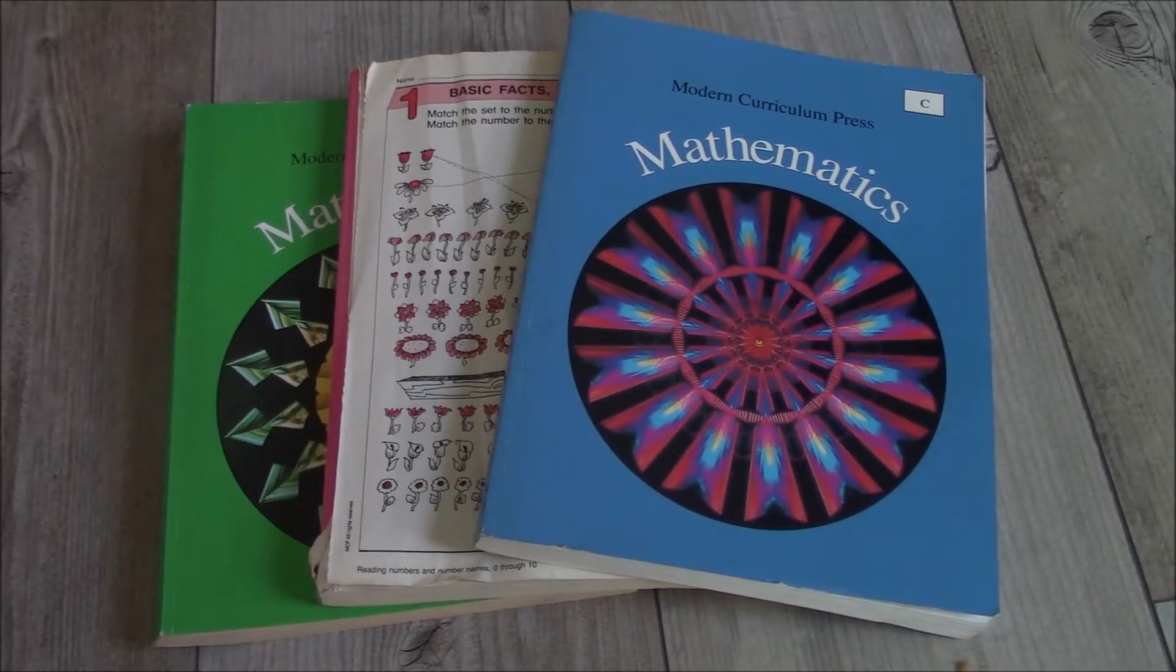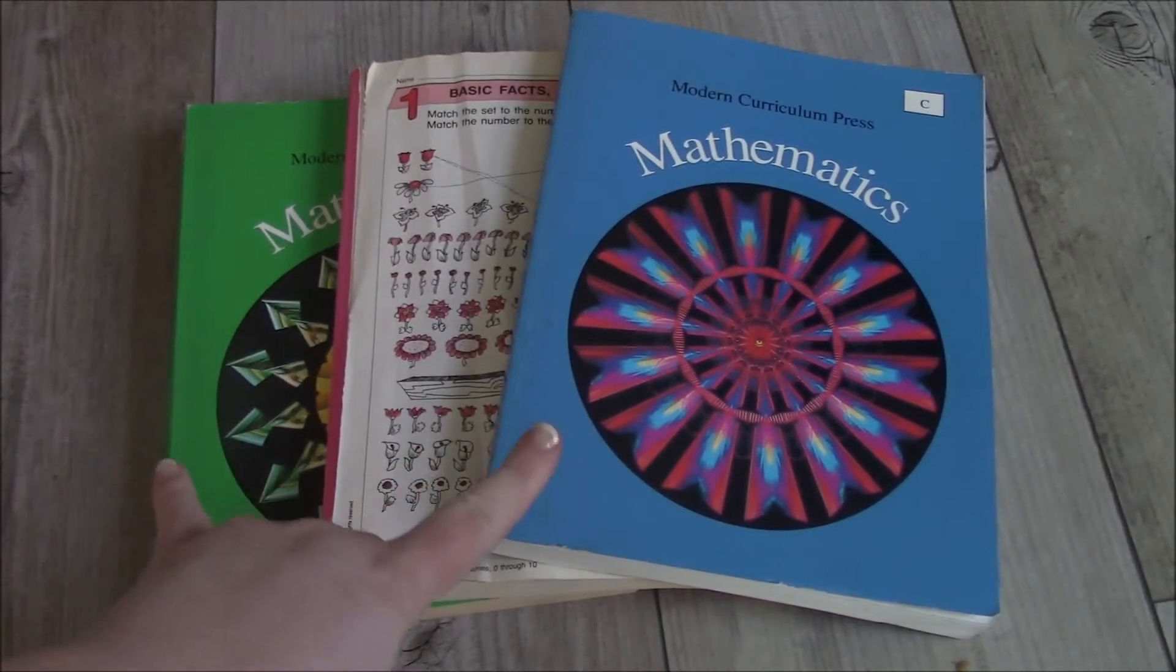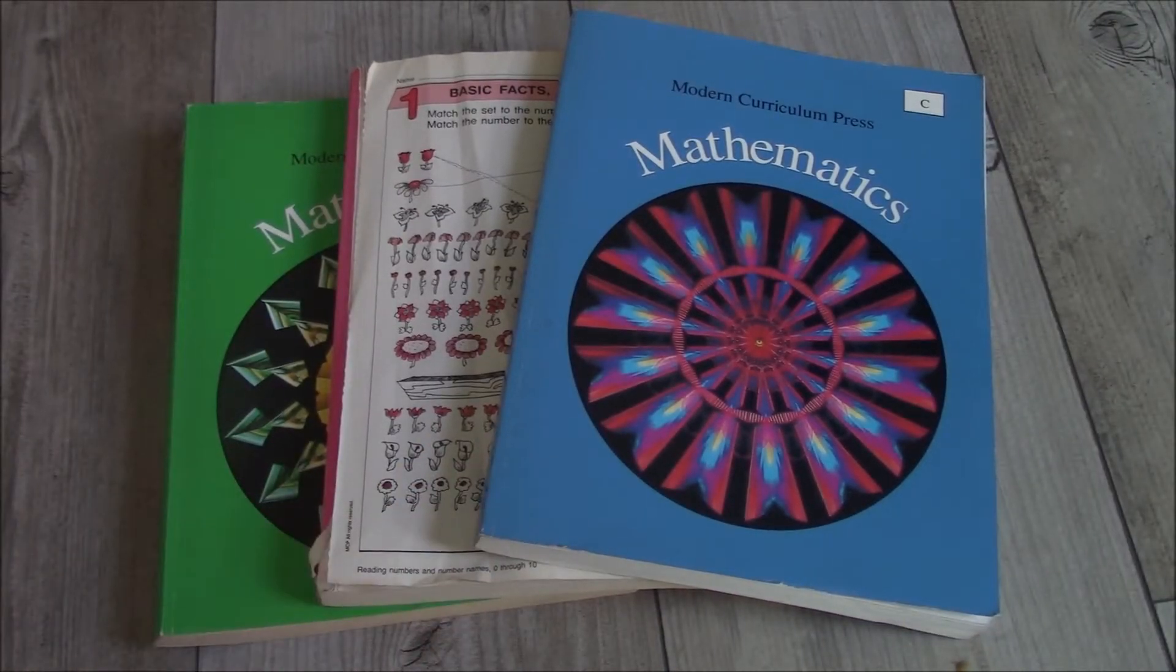Hello, everyone. I'm going to share with you a look at these Modern Curriculum Press Math books. These ones are bought and used off of Amazon. I could get two used books for the price of one that you can get off of Rainbow Resource.